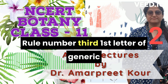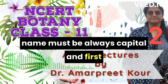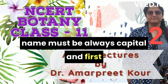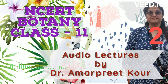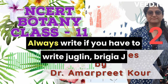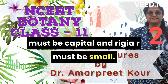Rule number three: the first letter of the generic name must always be capital, and the first letter of the specific name is always small. Always write — if you have to write Juglan regia, J must be capital and the R of regia must be small.